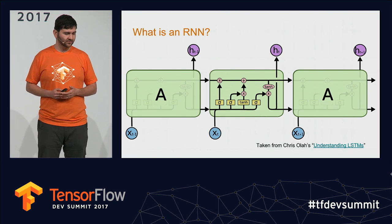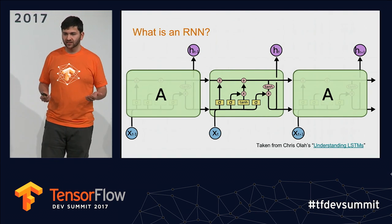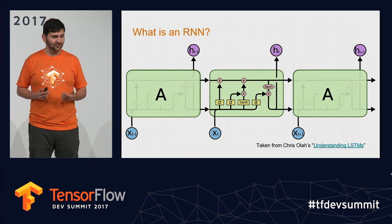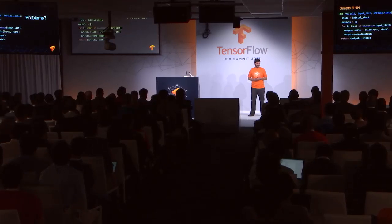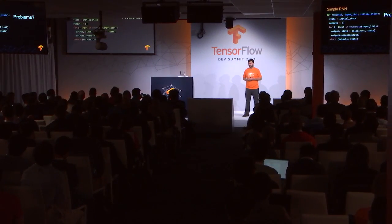Now that we've covered efficient reading and batching of variable-length data, let's talk about RNNs. Just to get everyone on the same page: an RNN is basically a unit of computation that you repeat over and over — it's essentially a for loop. The forward calculation takes inputs from below (x at every time step) and the state from the previous time step. This intermediate calculation emits a new output h and an updated state for the next time step. The diagram specifically shows an implementation of an LSTM, or long short-term memory, which is a very popular RNN architecture.